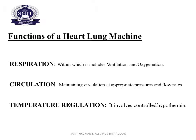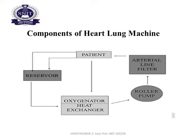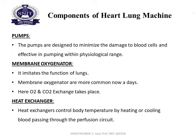The different components of a heart lung machine include a surface wire oxygenator, arterial line filter, and roller pump. The pump is designed to minimize damage to blood cells while effectively pumping blood within the physiological range. The membrane oxygenator imitates the function of the lungs.